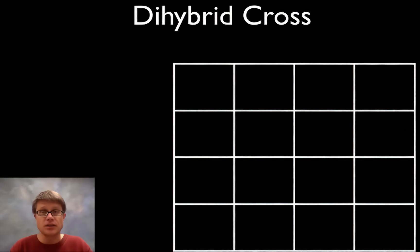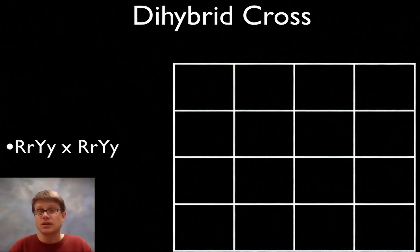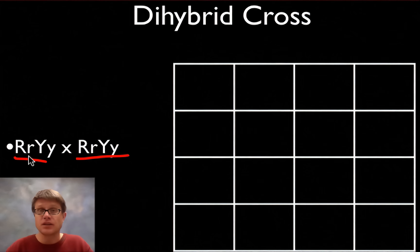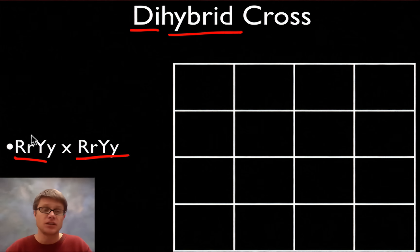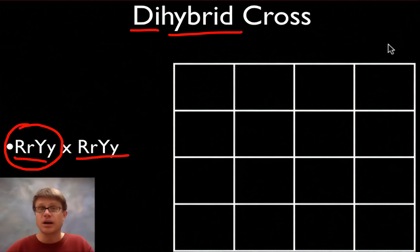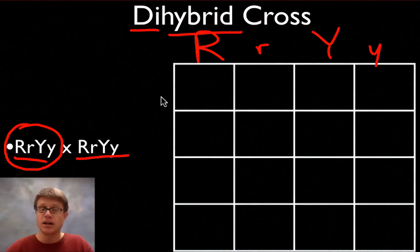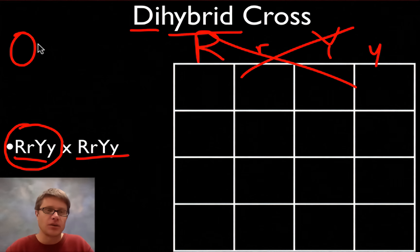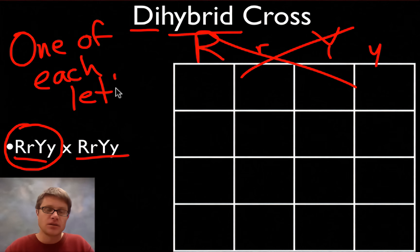Next are dihybrid crosses — this is where the mistake really starts. In a typical dihybrid cross, R stands for round seeds (dominant) and Y stands for yellow seeds (dominant); little r is wrinkled and little y is green. The common mistake is to see four letters and just write big R, little r, big Y, little y across the top — that's wrong. Whenever you figure out the gametes, you have to give one of each letter. Each gamete must have one allele for each trait.